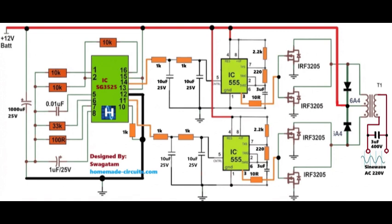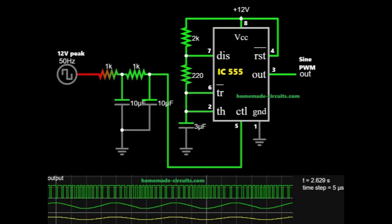Next comes the pulse shaping section. The sine wave signals from the integrator networks are fed into two separate 555 timer circuits. Each 555 timer is configured in pulse width modulation mode. The sine wave is applied to the control pin of the 555 timer. Inside the 555 timer, a high frequency triangular waveform is compared with the sine wave input.